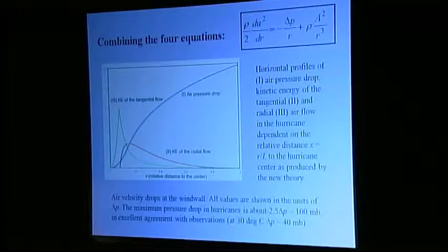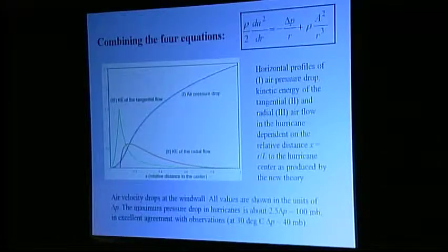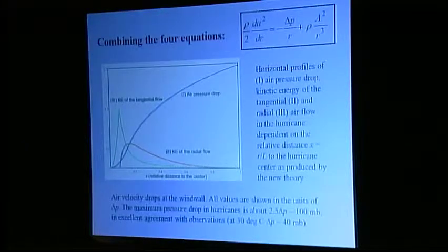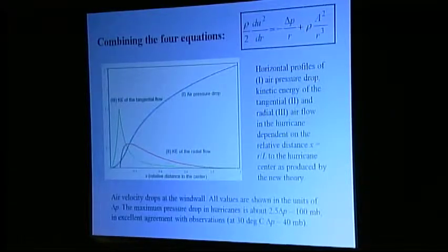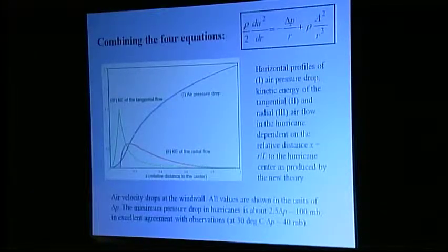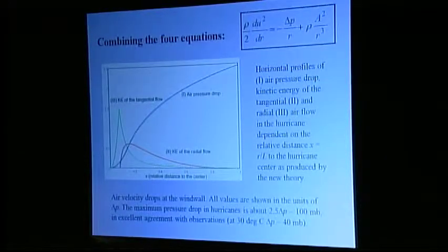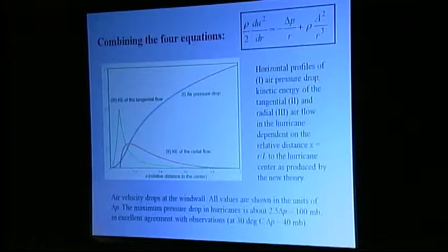Combining the four equations we obtained and making some reasonable approximations, we obtained a unified framework for the description of compact circulation events like hurricanes and tornadoes. The developed approach yields quantitative estimates of the wind wall radius, and vertical, tangential, and radial velocities as dependent on the distance to the center. These estimates are in good agreement with observations. In particular, the theory predicts the maximum pressure drop in hurricanes to be about two and a half times delta p, or around 100 millibars at 30 degrees Celsius — in excellent agreement with observations.